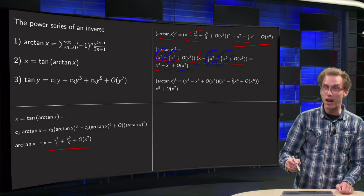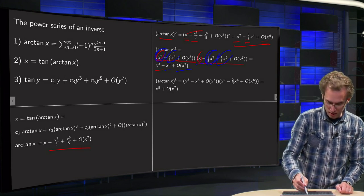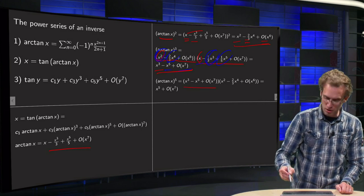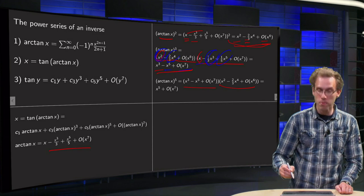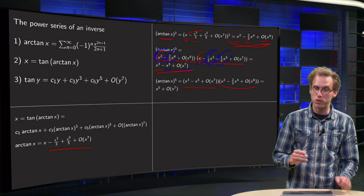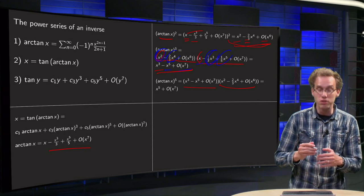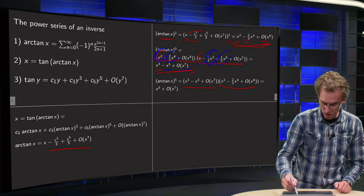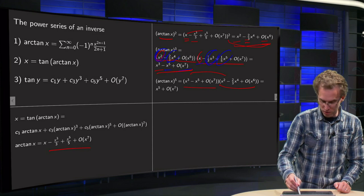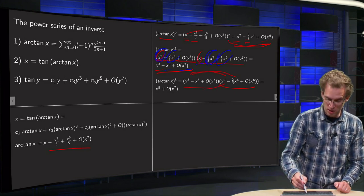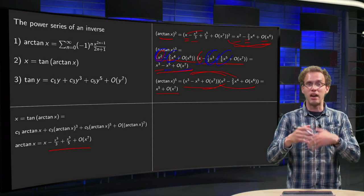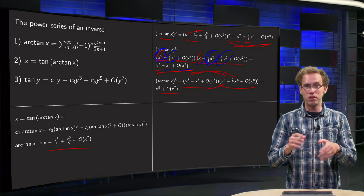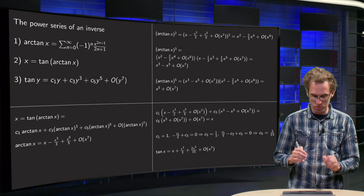For arctan⁵(x), we compute arctan³(x) times arctan²(x). Fortunately we don't need to account for too many terms — only the leading x⁵ term, since the cross terms give order x⁷ and higher. So arctan⁵(x) = x⁵ + O(x⁷). If you tried higher orders than this you'd get a lot of terms, but up to this point it's still tractable.